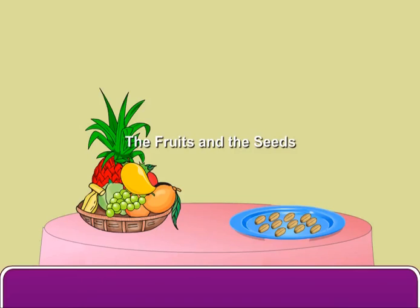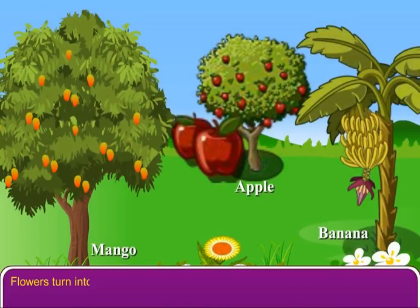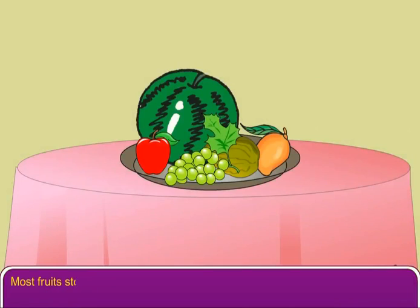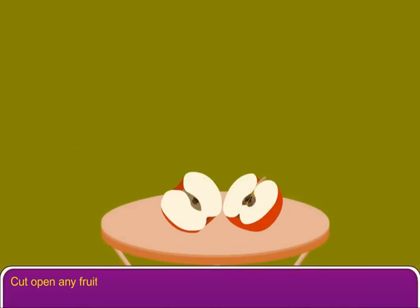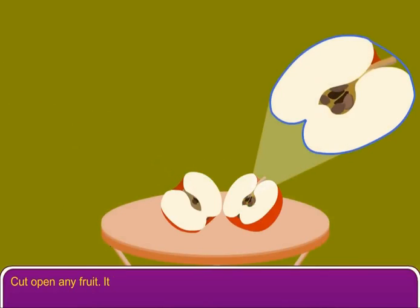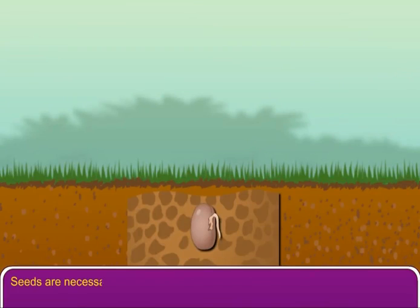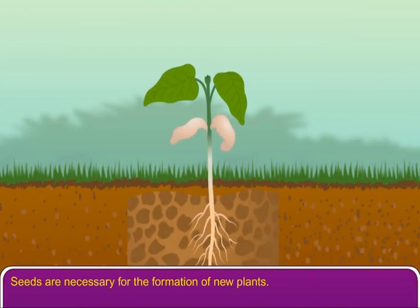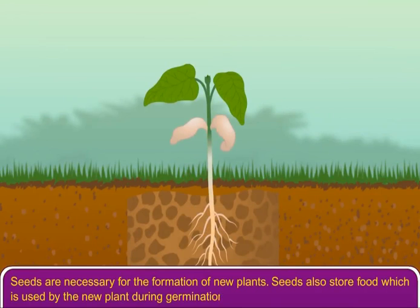The fruits and the seeds. Flowers turn into fruits. Most fruits store food. Cut open any fruit — it has seeds. Seeds are necessary for the formation of new plants. Seeds also store food, which is used by the new plant during germination.